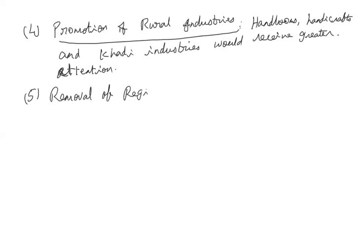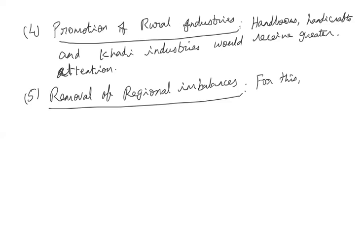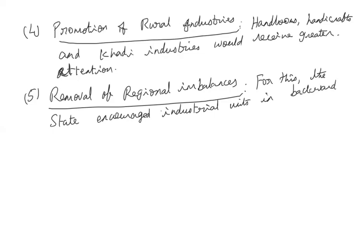The next feature is removal of regional imbalances — a common objective announced by all governments in their industrial policy resolutions. In order to remove regional imbalances, industries will be established in backward areas. The state encouraged industrial units in backward areas of the country, and all concessions will be given to those industries that come forward to establish their units in backward areas.